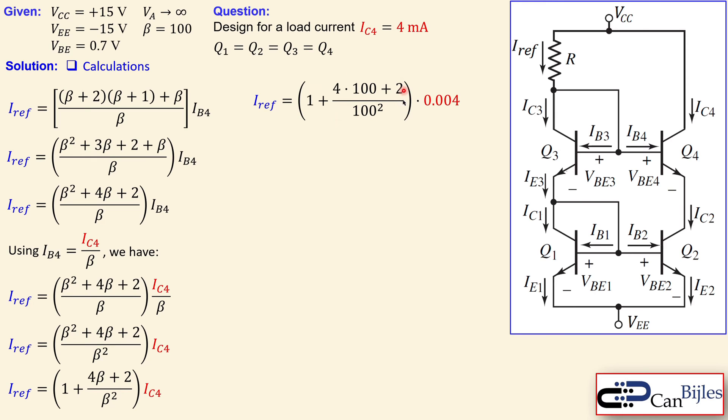Let's now substitute the values. We have a β of 100, and we want 4 milliamps, so 0.004. What we actually want to calculate is how much reference current we need. This is a little bit more, about 4.16 milliamps. We need to go a little bit larger because on the way to the load current we lose something due to the base currents.